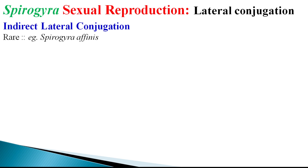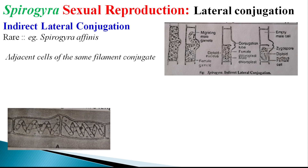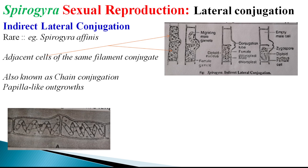Spirogyra affinis is the species most extensively studied for indirect lateral conjugation. During lateral conjugation, adjacent cells of the same filament conjugate — this is known as chain conjugation. Papilla-like outgrowths arise from each side of the transverse wall that separates adjacent cells, as visible in figure A, which shows the positions of papillae arising close to the transverse wall septum.